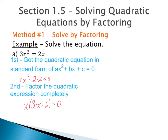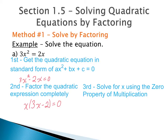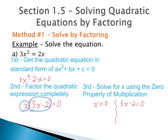Our next step is to solve for x using our zero property of multiplication, which says that a real number times zero equals zero. Looking at our two factors, either factor can equal zero to make this a true statement. Either x can be zero — because zero times a real number equals zero — or the second factor, 3x minus 2, can equal zero, because then we'd have x times zero which equals zero. So we set each factor equal to zero.